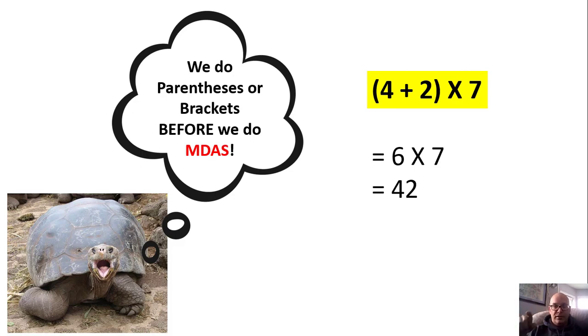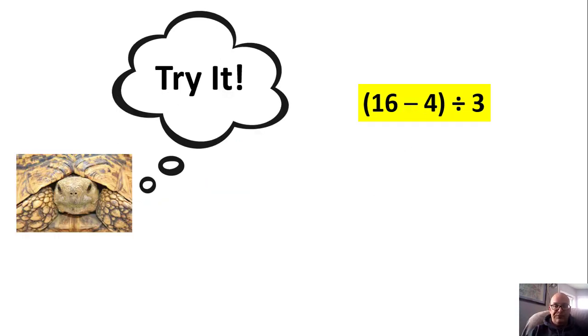Try this one. Which comes first? You can pause it and figure it out. Well, normally it would be the division, but we have parentheses, so we do the parentheses first. 16 minus four is 12. We just copy this, divided by three, into the next line, and we do it step by step. We get four.